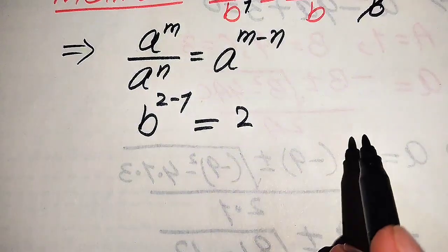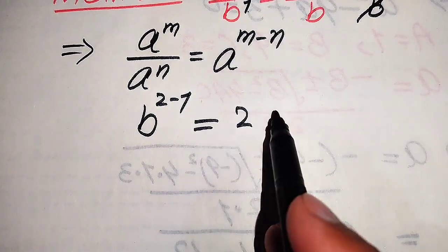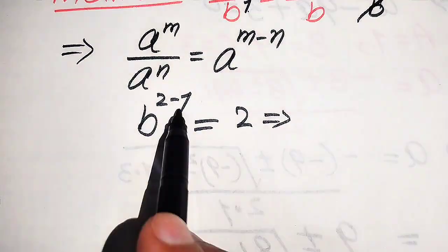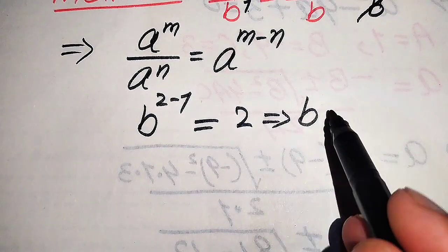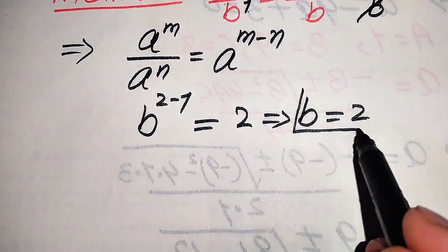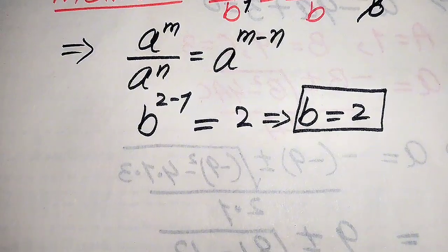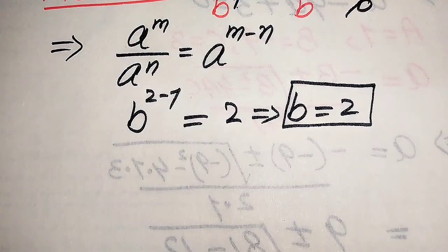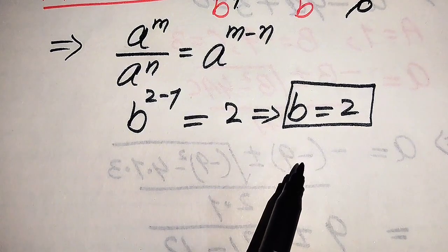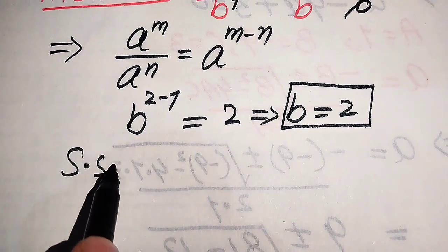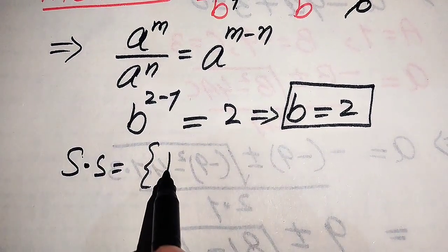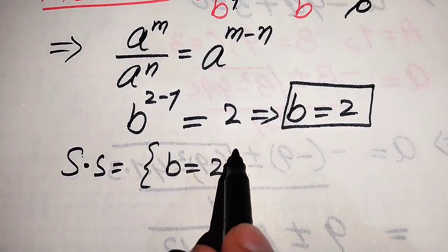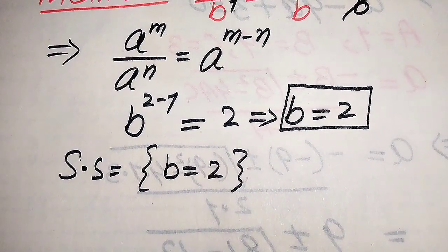So we get b to the power of 2 minus 1, which equals b to the power of 1, equals 2. Therefore b equals 2. In the second method, we get only one root, b equals 2, which is the same solution confirmed in the first method. Finally, the solution set in both methods is b equals 2.